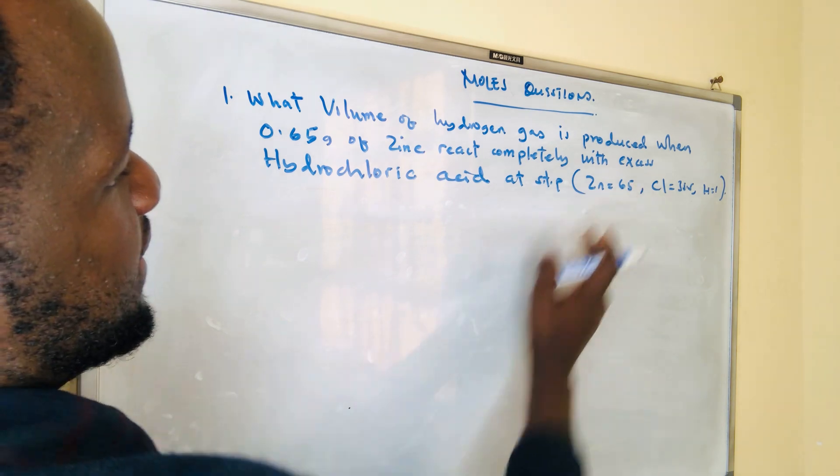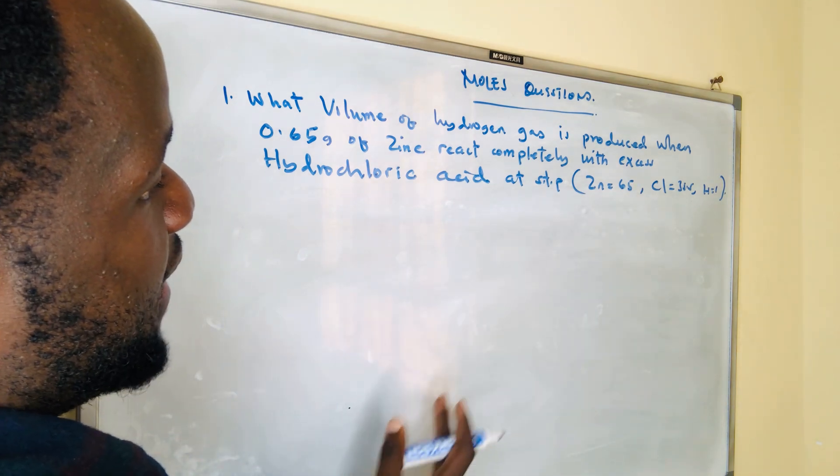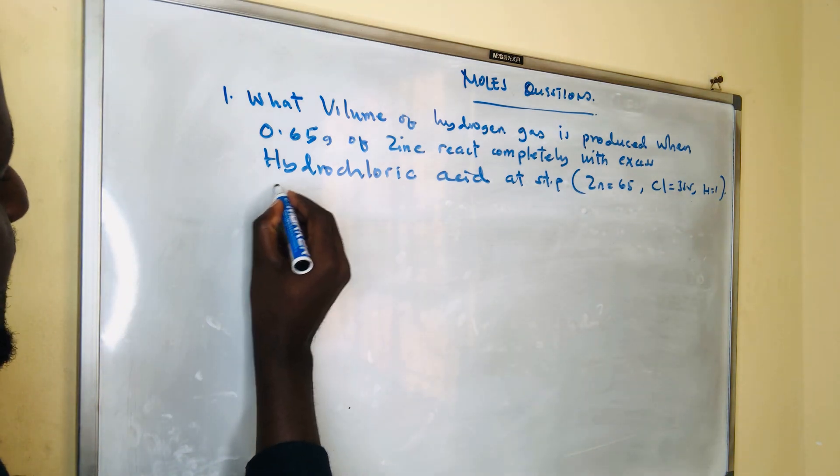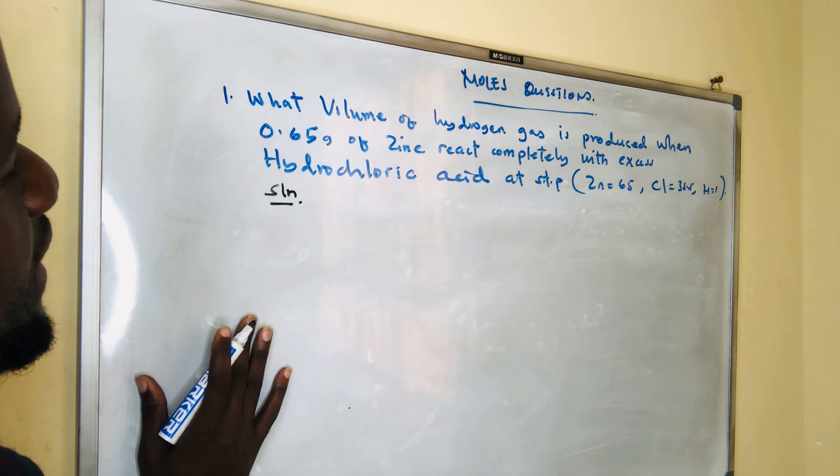The molar mass of zinc is 65, chlorine is 35.5, and hydrogen is 1. To solve this problem, you have to write the equation between zinc and hydrochloric acid.